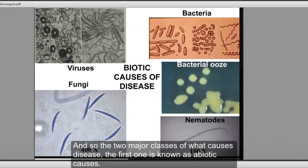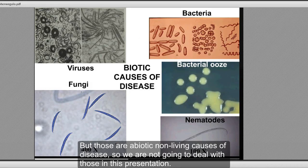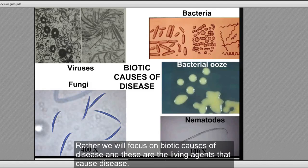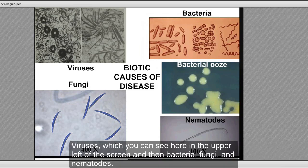There are two major classes of what causes disease. The first is known as abiotic causes, which include non-living agents — for example, chemical injury, excessive heat, or excessive fertilization. We are not going to deal with those in this presentation. Rather, we will focus on biotic causes of disease, which are the living agents that cause disease. We have four major living agents: viruses, bacteria, fungi, and nematodes.